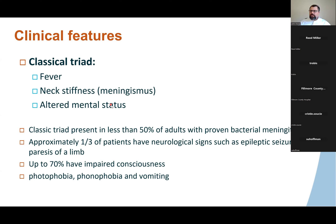The classic triad for meningitis is fever, a stiff neck, and altered mental status — essentially fever and a headache. If someone has fever and a headache, you immediately want to think: could this be meningitis? Start the workup. If you're considering bacterial meningitis, start antibiotics immediately. This classic triad only presents in less than 50% of cases, so it's not something you'd see in all patients. But if you see this triad, think about meningitis.